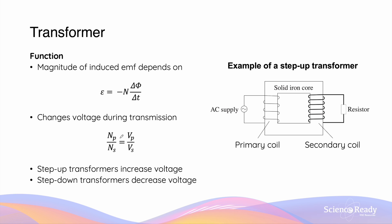In mathematical form, this gives us the equation: Np divided by Ns — the number of turns in the primary coil divided by the number of turns in the secondary coil — equals Vp divided by Vs, the voltage across the primary coil divided by the voltage across the secondary coil. If there are more turns in the secondary coil, the voltage would be higher, in which case we refer to this as a step-up transformer.